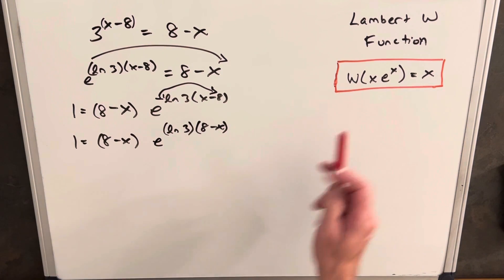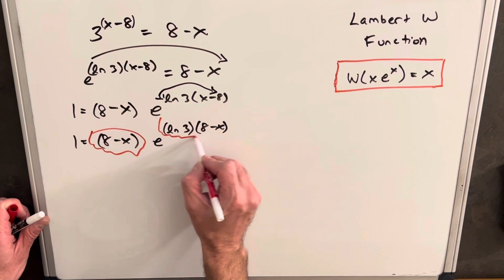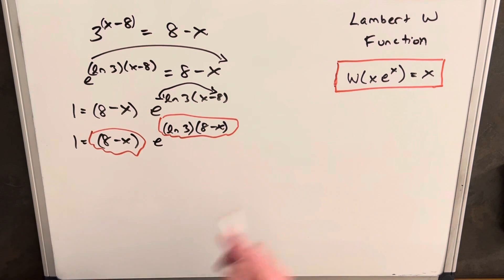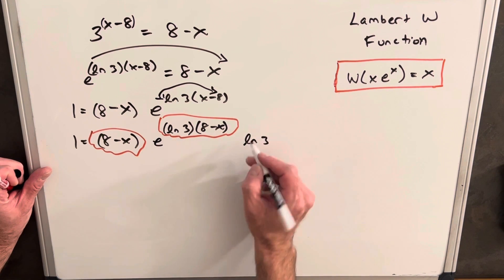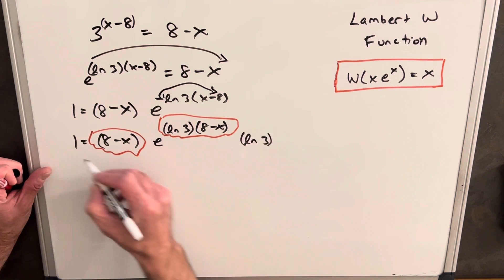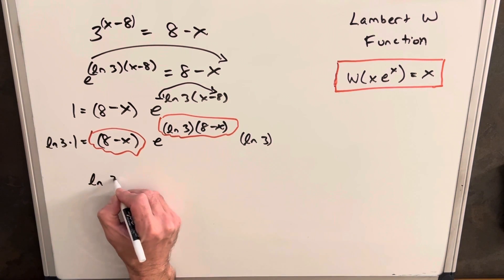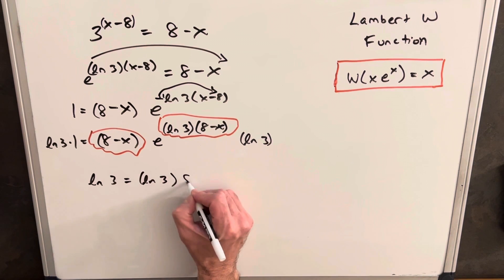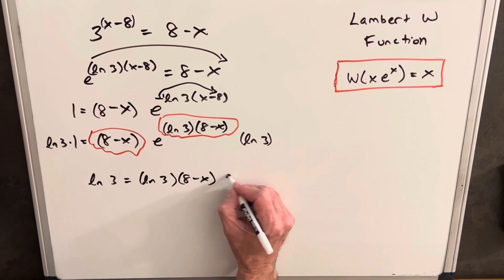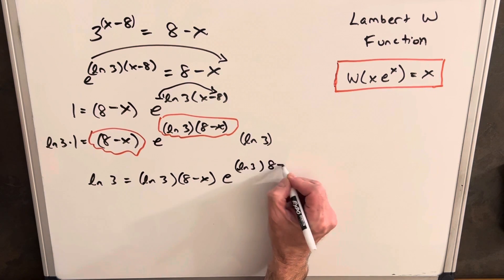Now we're really close to the Lambert W format. We want this piece to be exactly the same, so we can use our formula. We multiply through both sides by ln 3 — since we have that there already — so now we have ln 3 equals ln 3 · (8 minus x) · e^(ln 3 · (8 minus x)).